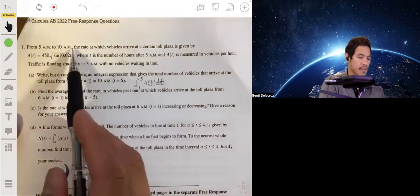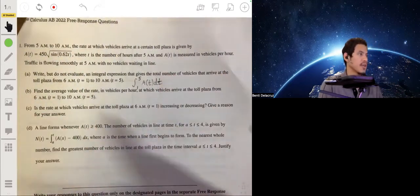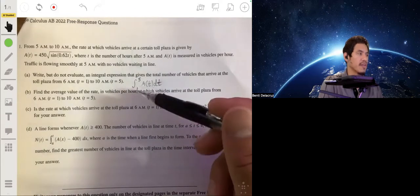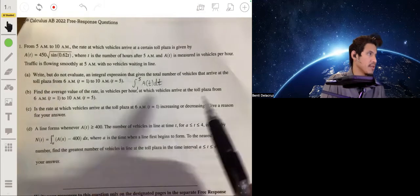Remember, this is the rate at which the cars are arriving, so when you integrate this, you'll get the total number of cars within this interval. That's your answer, because it's not asking to evaluate, so that's all you need to put.